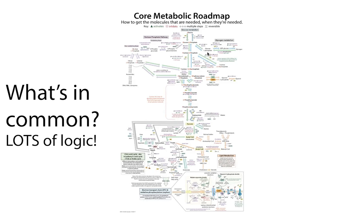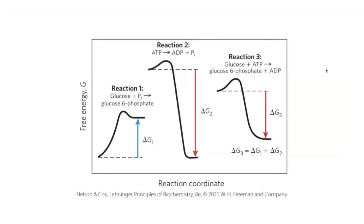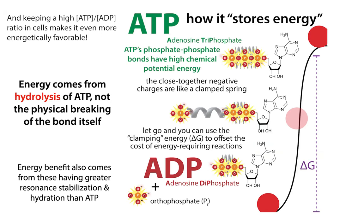Metabolism shouldn't be scary, and it's a lot less scary if you think about what everything has in common, as opposed to what these pathways are all having differently. One of the things they have in common is the idea of reaction coupling, having some reactions that are near equilibrium and some that are far from equilibrium, so that we're able to control the direction of the reaction, as well as have go/no-go points to make whole pathways either go or not go. Often this is going to be using ATP, so let's review all these things.